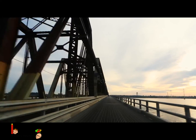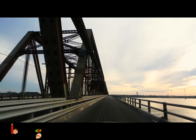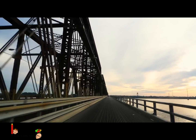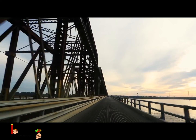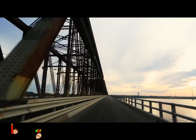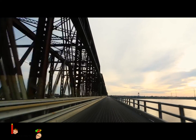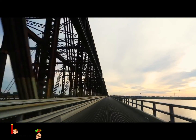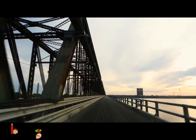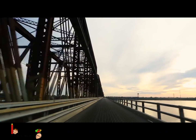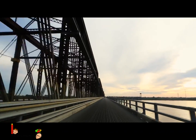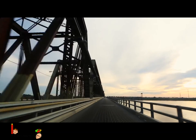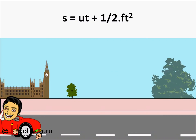A car was moving at 5 m per second. Then the driver pressed the accelerator, creating a 10 m per second squared acceleration. When we try to find the distance covered by such an accelerating vehicle, we use the formula s = ut + ½ft².